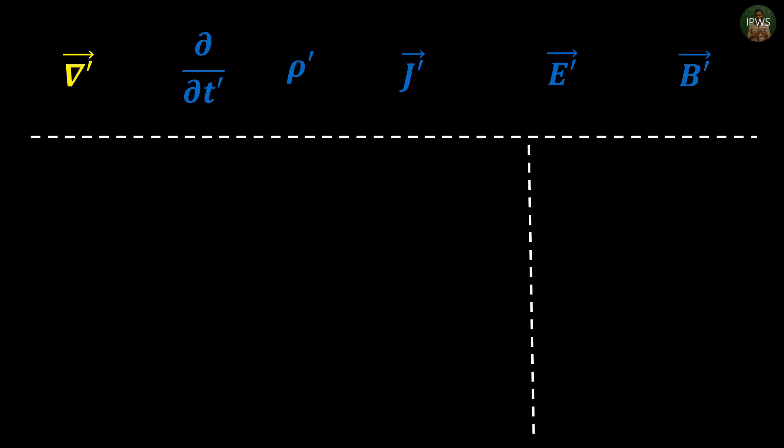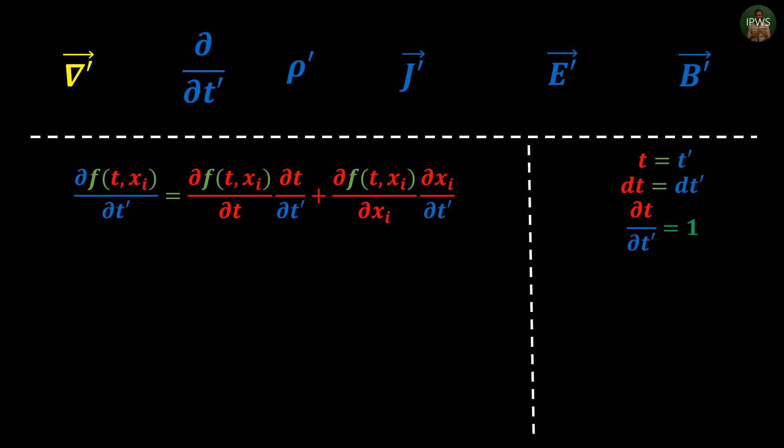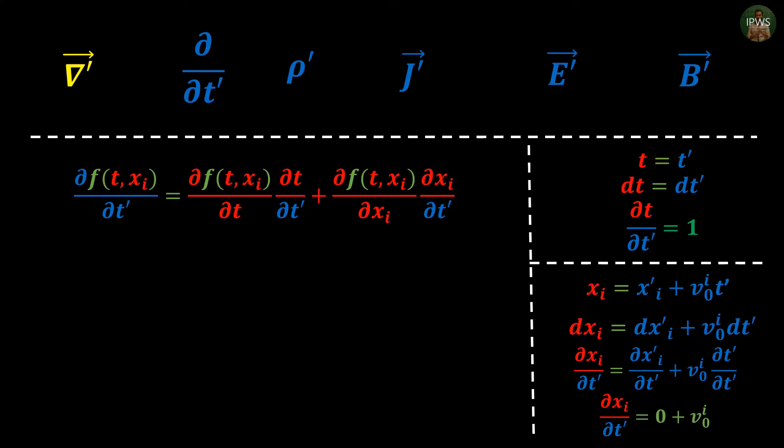We proceed in the same way as before for t'. Since f is not a function of t' we also have to use chain rule here. Using our previous definition of time, we can find partial derivative of time with respect to t' is 1 and partial derivative of x with respect to t' is 0. Now you might have confusion regarding ∂x'/∂t'. How did it become 0 and not v'?